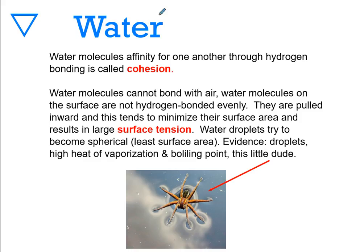Water molecules' affinity for one another through hydrogen bonding is called cohesion. Water molecules cannot bond with air, so the water molecules on the surface are not hydrogen bound evenly. They're pulled inward and this leads to minimizing their surface and results in large surface tension. Water droplets try to become spherical, which means they have the least surface area.